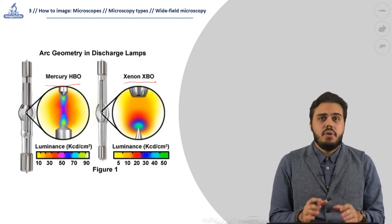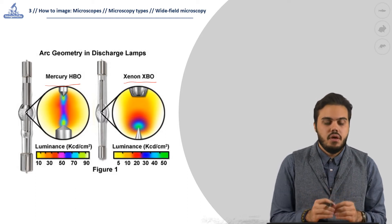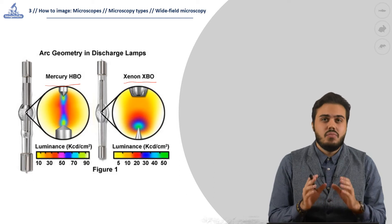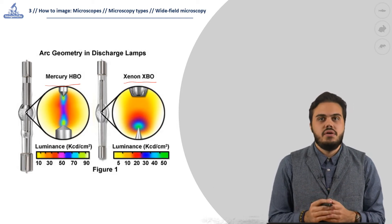The mercury lamp has a strong intensity, it covers a broad spectrum, peaking near the UV. The xenon lamp has a more even spectrum but the intensity is lower and the peak is near the infrared.